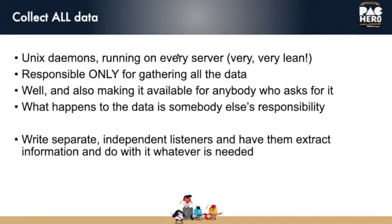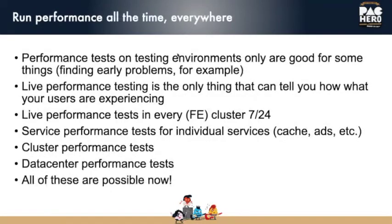The second daemon runs top every 10 seconds — six times a minute — and shoves the output to a pipe where it gets sucked elsewhere and processed. The third daemon is the most interesting: it wakes up every minute, rolls dice based on how many machines are running this exact same code, and decides whether to crash the machine right now. If it decides to crash, it crashes, collects the core file, analyzes stack traces, and ships it off for later analysis. Notice the daemons do no analysis themselves — you want to collect data from thousands or millions of machines first, then write independent listeners to extract information.